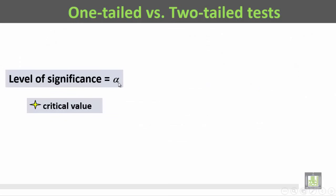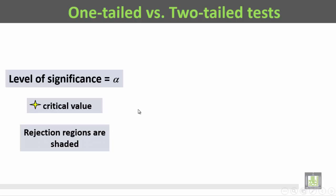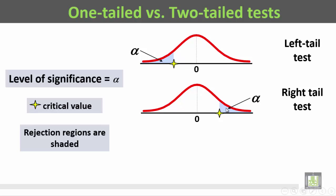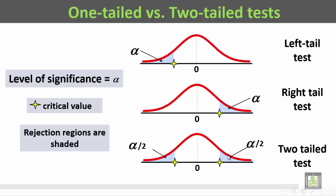We have the level of significance called alpha, the critical value from statistical tables, and the rejection regions which are shaded. For a left-tail test, the critical value and shaded alpha area are to the left. For a right-tail test, the critical value and alpha are to the right. For a two-tail test, there is alpha divided by 2 on both the right and left sides.